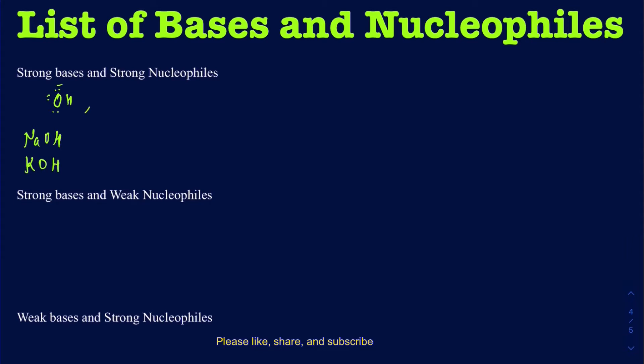The other example is your methoxide, OCH₃⁻. Again, you could have sodium methoxide or potassium methoxide — you're going to have some sort of metal with it because you're not going to be adding a bare anion in solution. So that's also going to be your strong base and strong nucleophile. And I can have OCH₂CH₃, which is ethoxide — that's another one that's going to be commonly seen.